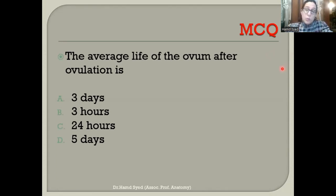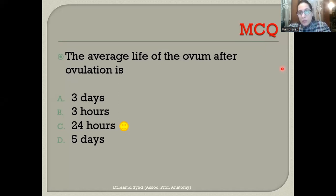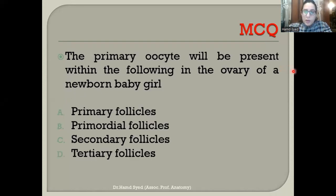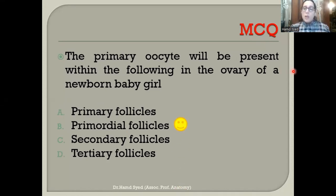A review MCQ: the average viability of the ovum after ovulation is 24 hours — after which it becomes non-viable. Another MCQ: in a newborn baby girl, the primary oocytes are surrounded by a primordial follicle, which consists of a single layer of flattened follicular cells.